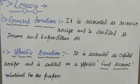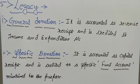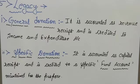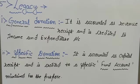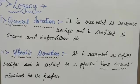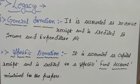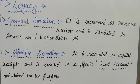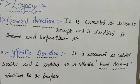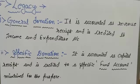The general type legacy is known as general donation. It is accounted as revenue receipt. It is very similar to the general donation when you receive fund. It is exactly same to that donation. General legacy or general donation is accounted as a revenue receipt and it is credited to income and expenditure account.